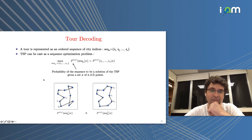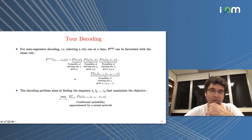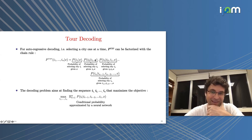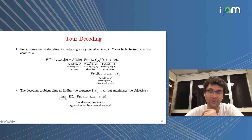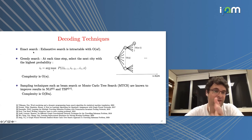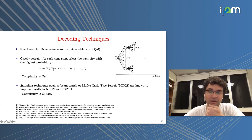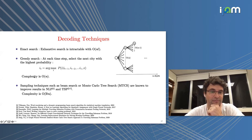For decoding techniques, the probability of a tour is obtained via the chain rule: the probability of the first city given the input points, times the probability of the second city given the first and all points, and so on — maximizing the product of conditional probabilities learned by the neural network. Exact search gives factorial complexity; greedy search takes the maximum at each step in linear time; beam search and Monte Carlo Tree Search give intermediate complexity proportional to beam width b.